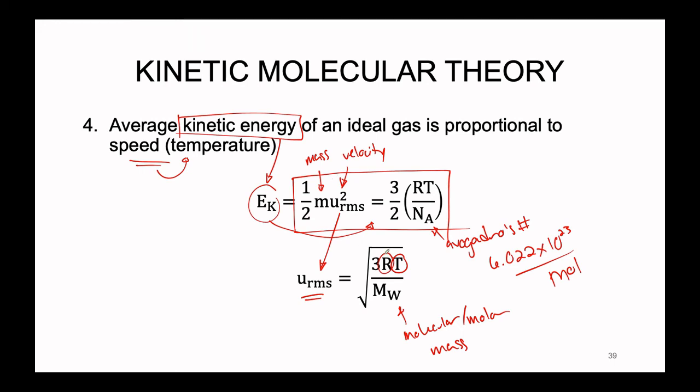Before moving on to using this equation, let's discuss the gas constant R. In the previous lecture, we learned R in the context of the ideal gas law. There are two versions of R. The first pertains to measuring pressures and volumes in PV = nRT. Here, where energies and velocities are being observed, we use the other form of the ideal gas constant: 8.314 joules per mole per Kelvin.